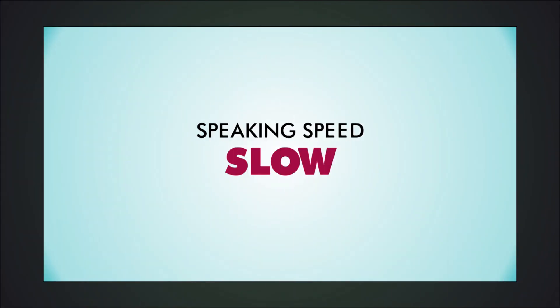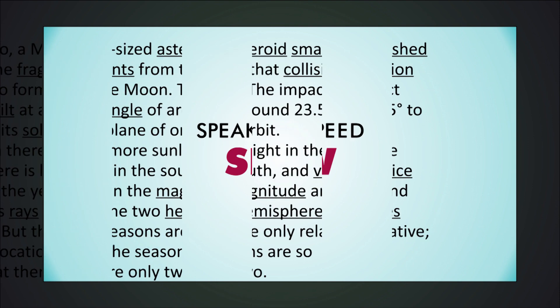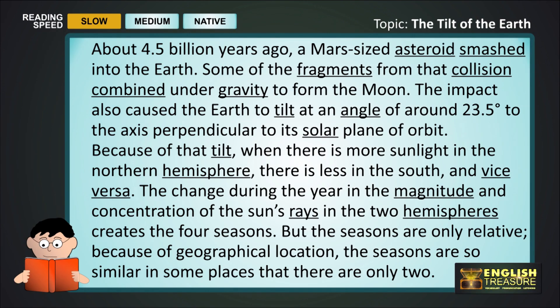We'll start by speaking slowly. About 4.5 billion years ago, a Mars-sized asteroid smashed into the earth. Some of the fragments from that collision combined under gravity to form the moon. The impact also caused the earth to tilt at an angle of around 23.5 degrees to the axis perpendicular to its solar plane of orbit.